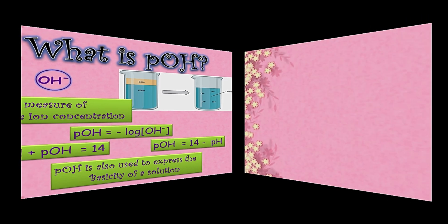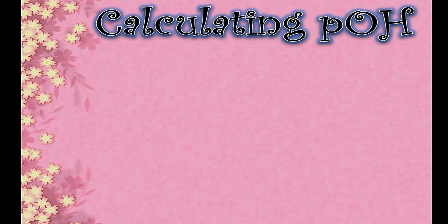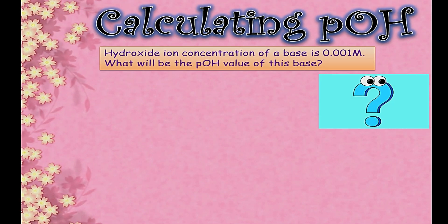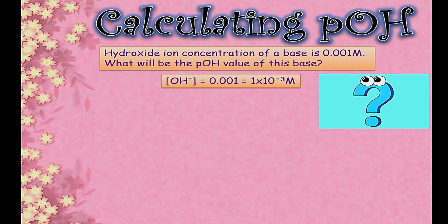Now let's calculate pOH. For example, the hydroxide ion concentration of a base is 0.001 M — what will be the pOH value? First, you need to convert the given concentration into exponential form. When the decimal point shifts, it becomes 1 × 10⁻³.